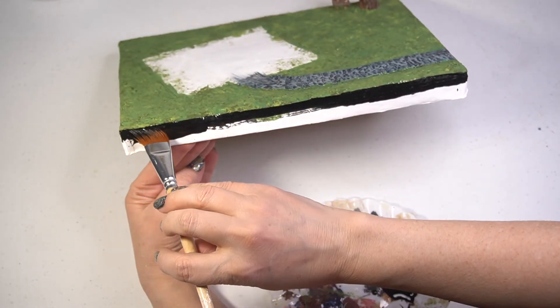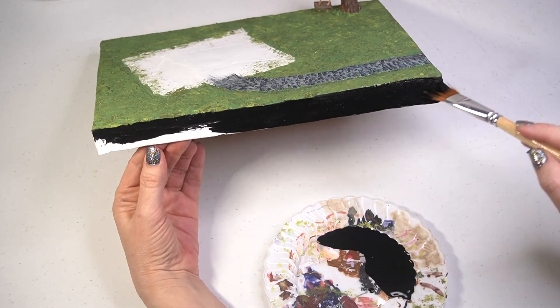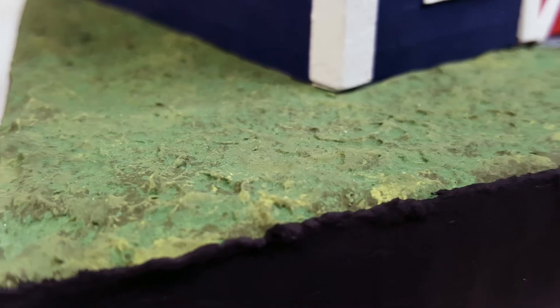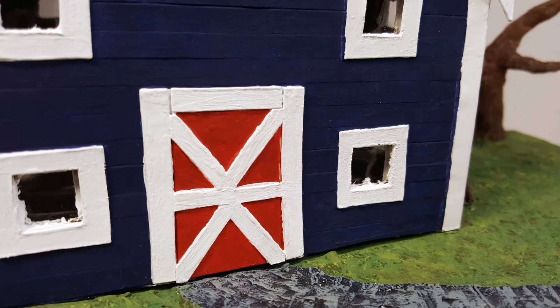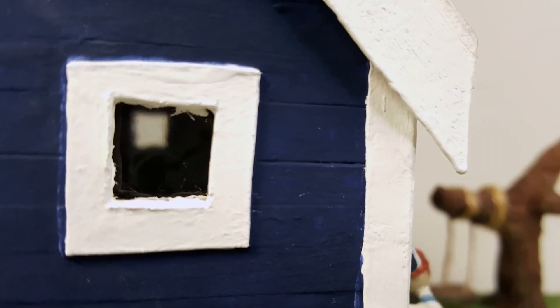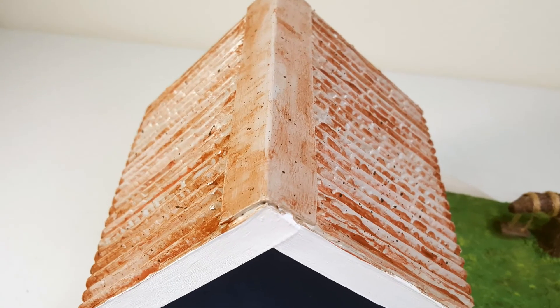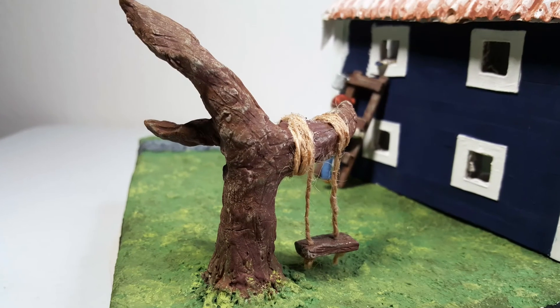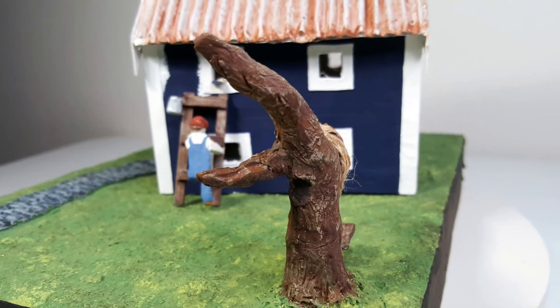The last thing I had to do was paint the edge of the base. Once that dried, I could add all my pieces and this farmhouse barn cardboard cottage was complete.